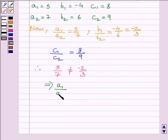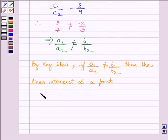By the key idea, we get the two lines intersect each other at a point. Hence, the lines intersect at a point is the required answer.